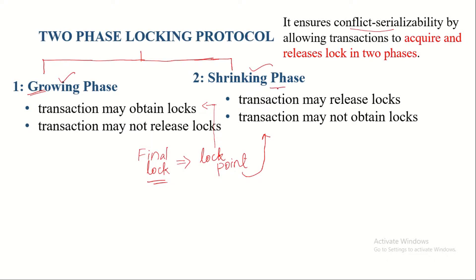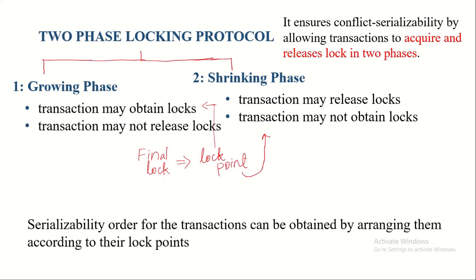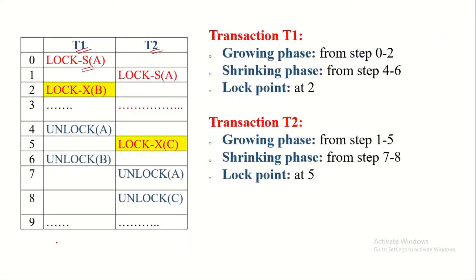When a transaction enters the shrinking phase, it may release locks, but it is not permitted to acquire any more locks. According to the two-phase locking protocol, the serializability order for transactions is determined by arranging them according to their lock points.